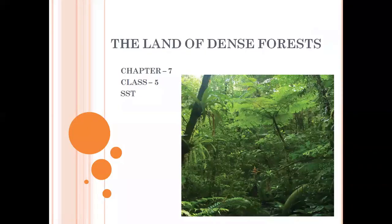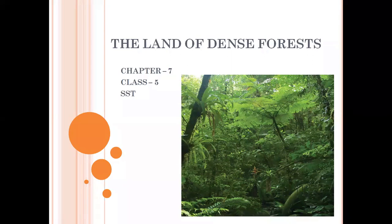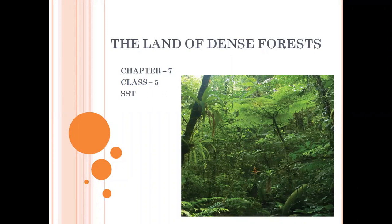Om Namah Shivaya children. Today we will read about chapter 7, that is the land of dense forest. Now when I say dense, it means a forest where you will find lots and lots of trees. When we talk about forest, it is something also known as natural vegetation, because it grows on its own with the help of nature. Human beings do not help such plants in growing; they grow of their own.